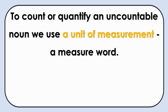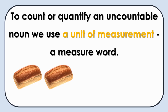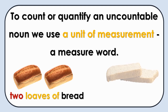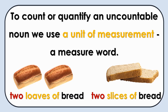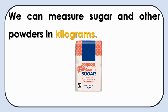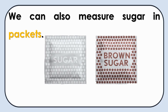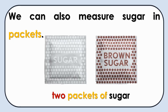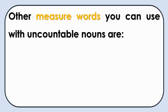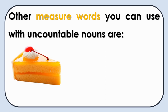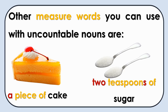To count or quantify an uncountable noun, we use a unit of measurement — a measure word. For example, we cannot usually say 'two breads' because bread is uncountable, but we can say 'two loaves of bread' or 'two slices of bread.' Loaf and slice are two measure words for bread. We can measure sugar and other powders in kilograms: a kilogram of sugar, or two packets of sugar. Other measure words you can use with uncountable nouns are: piece — a piece of cake; spoon — two teaspoons of sugar.